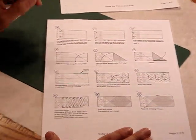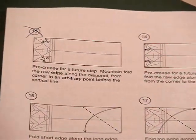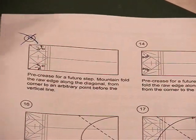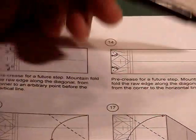And we're going to skip number 13. Do not fold 13. It says to make a pre-crease here. Just forget that. Skip that. Go straight to 14 and 15.